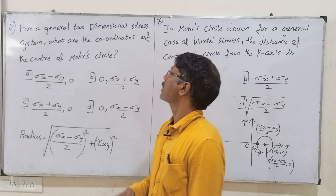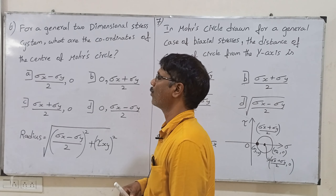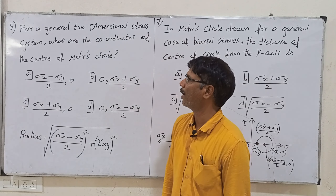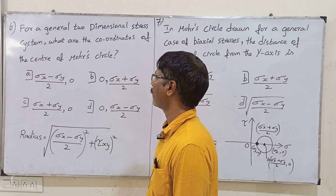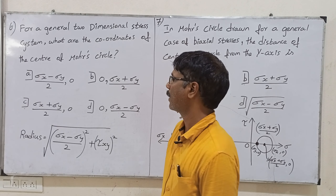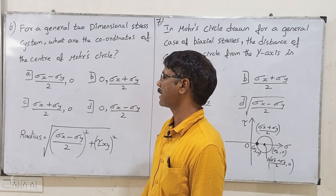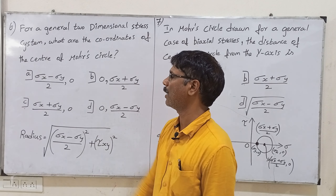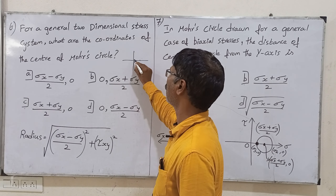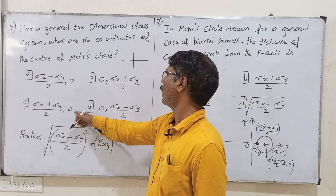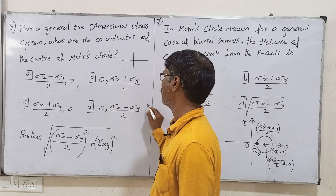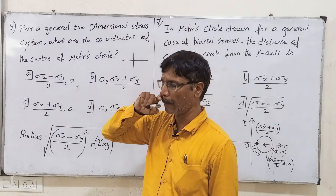For general two-dimensional stresses, the coordinates of the center of the Mohr's circle involve radius, diameter, center, and midpoint. The midpoint is (x1 plus x2) divided by 2 for x, and (y1 plus y2) divided by 2 for y. The answer is that y equals zero as the center of the Mohr's circle, with x1 as the center. Using the midpoint formula, y equals zero.